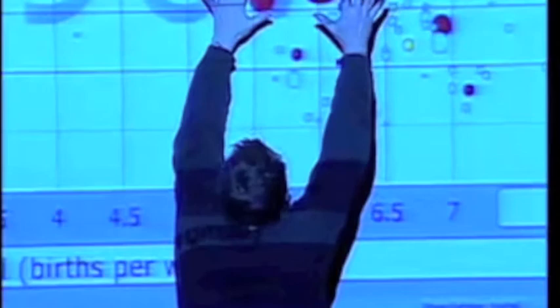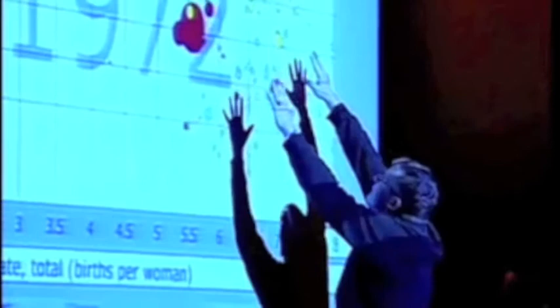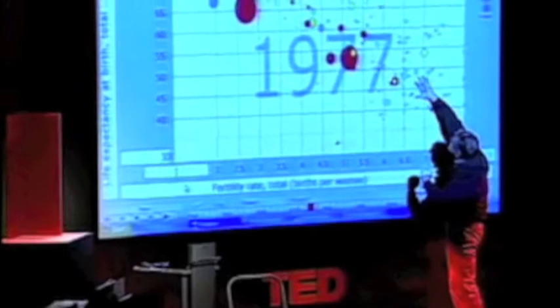Can you see there? It's China. They're moving towards better health. They're improving there. All the green Latin American countries, they are moving towards smaller families. The yellow ones here are the Arabic countries and they get larger families. No, longer lives but not larger families.